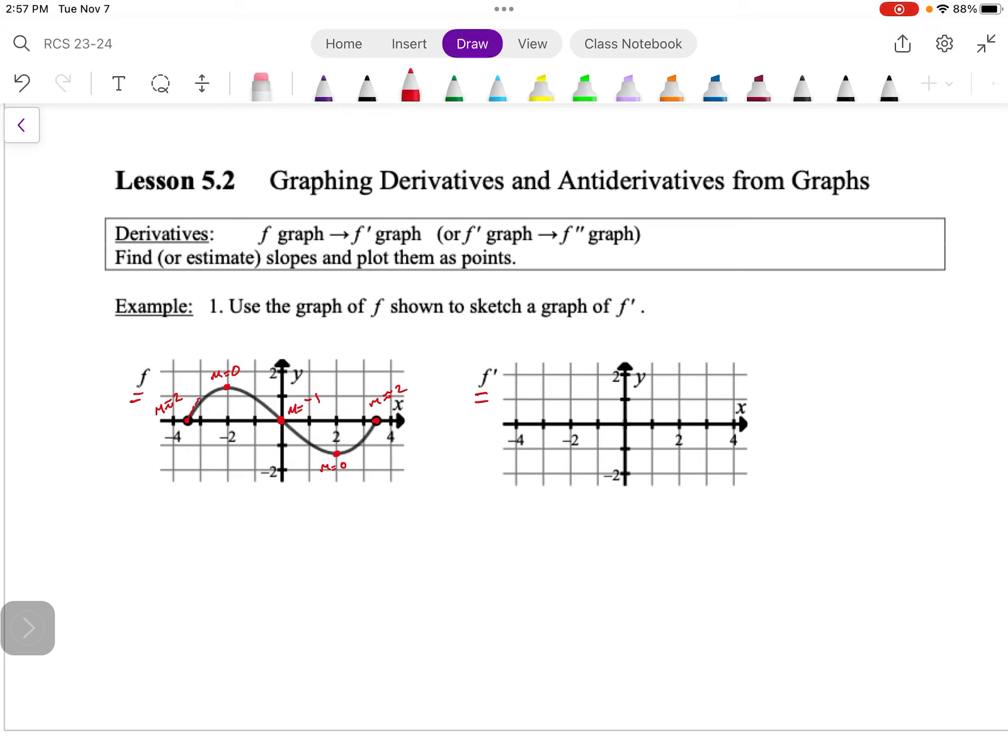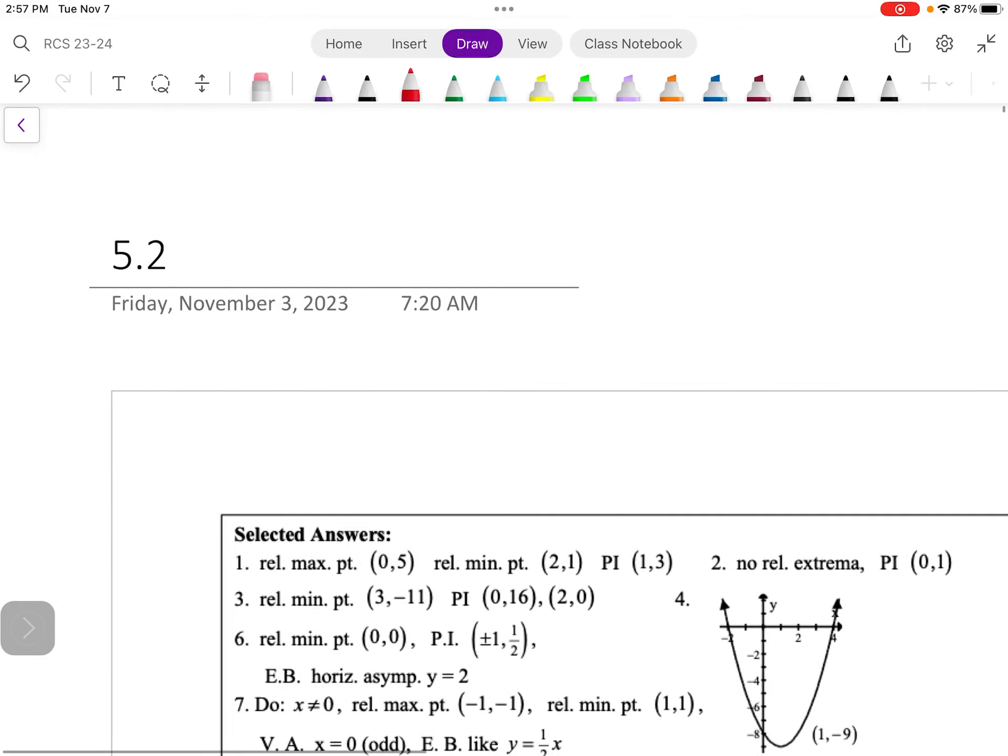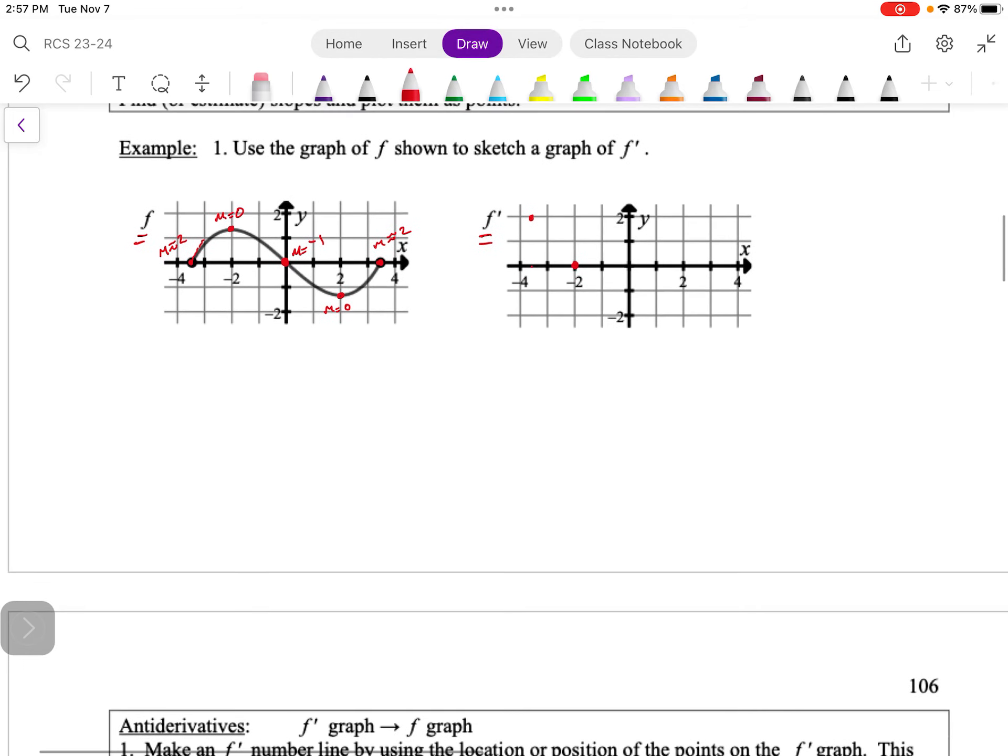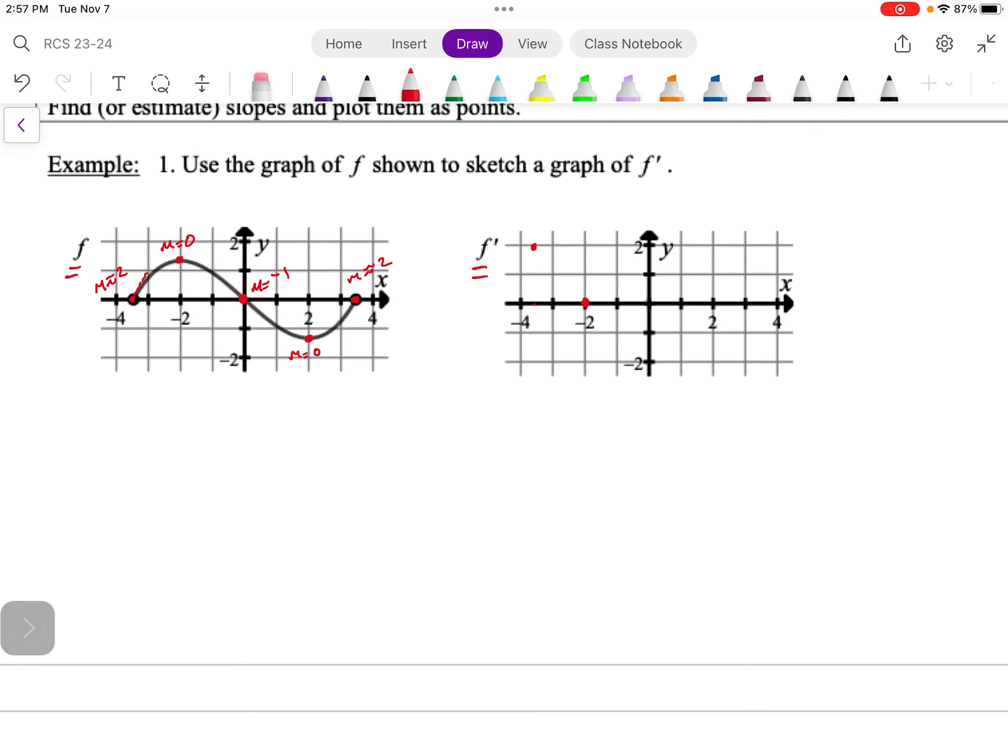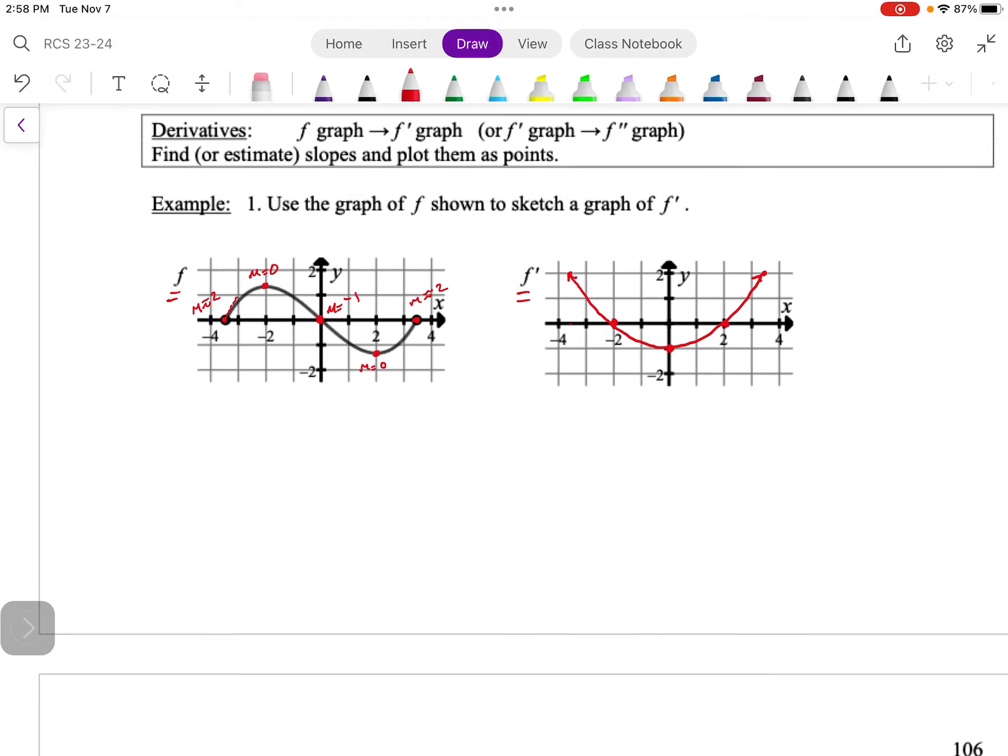So let's come over to this graph of f prime and we'll start to toss these points on there. So we said our slope at negative 3.5 was about two, and then at negative two we said it was zero. At zero our slope was negative one. Our slope at two was zero, and then our slope again at 3.5 was positive two. Okay, so sketch a little line through those, bada bing, bada boom.